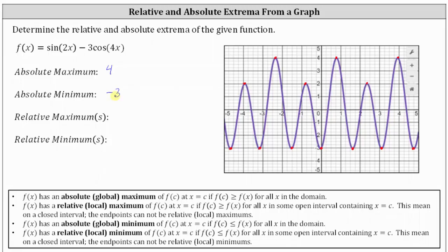Now let's identify the relative extrema. A relative maximum occurs where the function changes from increasing to decreasing, and a relative minimum occurs where the function changes from decreasing to increasing. So again, the relative maximums will be high points on the graph where the function changes from increasing to decreasing.